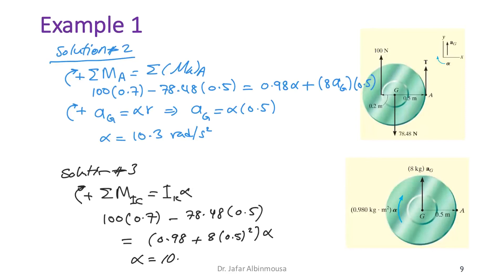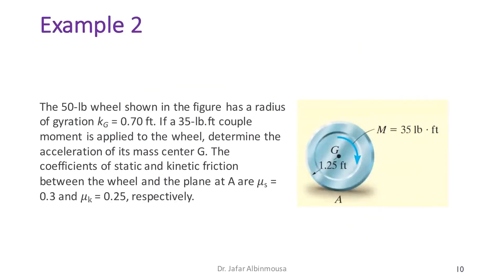In the second example, a 50-pound wheel has a radius of gyration k_G = 0.7 ft about its center of mass. A 35 lb·ft moment is applied, and we want to determine the acceleration of the mass center G.